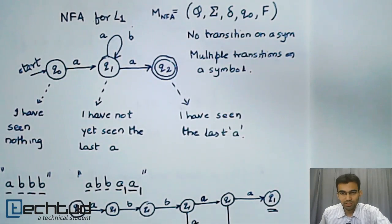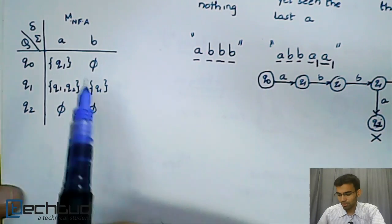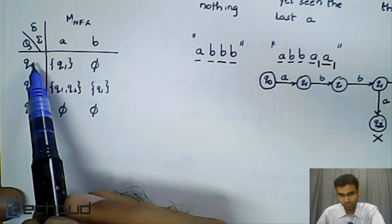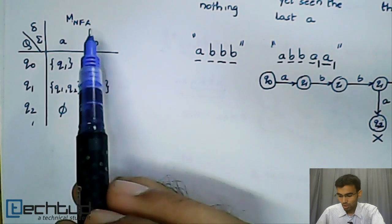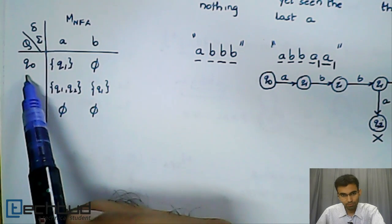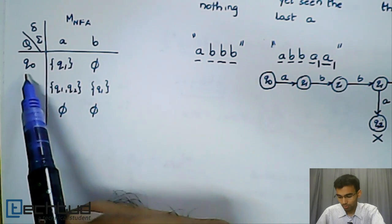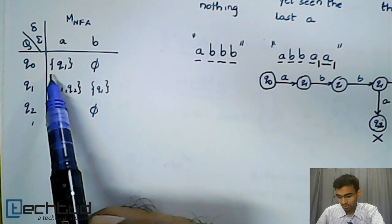In this particular case, the transition function for MNFA is as follows. You have three states Q0, Q1, Q2. On an A, Q0 will go from Q0 to the set Q1.